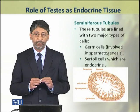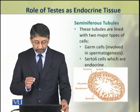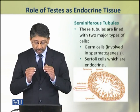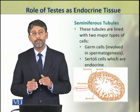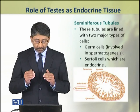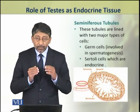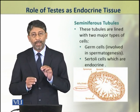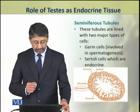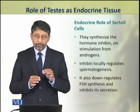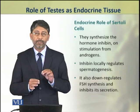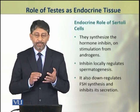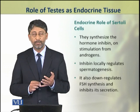The seminiferous tubules are lined with two major types of cells. One are the germ cells, which are involved in spermatogenesis. The other type are the Sertoli cells, which function as endocrine cells. Sertoli cells synthesize and secrete a hormone called inhibin.